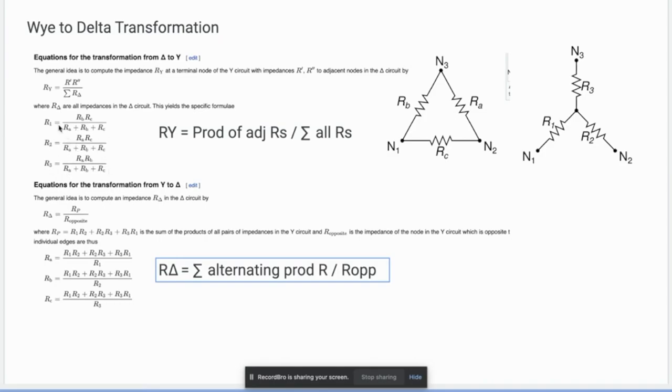Hindi nyo na kailangan i-memorize. For example, you want the R1 of the Y, you need to memorize the position of the resistors given here. That is prone to mistake. You want to convert this into an equivalent Y. What do you do is you will draw the alternate Y here. So therefore, for you to be able to know this equivalent.